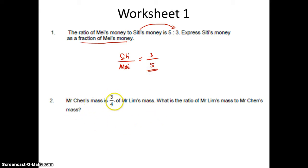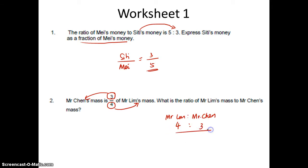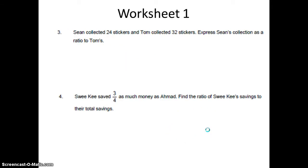Mr Chen's mass is 3 quarters of Mr Lim's mass. So 3 units is Mr Chen, 4 units is Mr Lim. What is the ratio of Mr Lim's mass to Mr Chen's mass? I want Mr Lim is to Mr Chen. So Mr Lim is 4 units, Mr Chen is 3 units. So the answer is 4 is to 3.